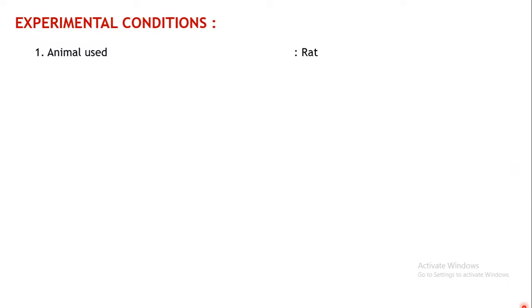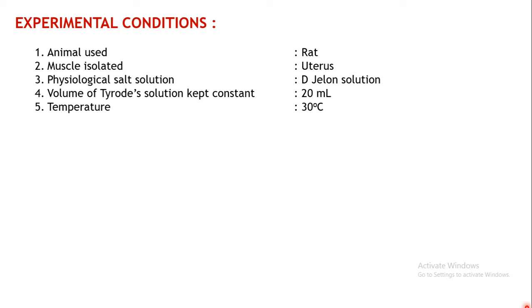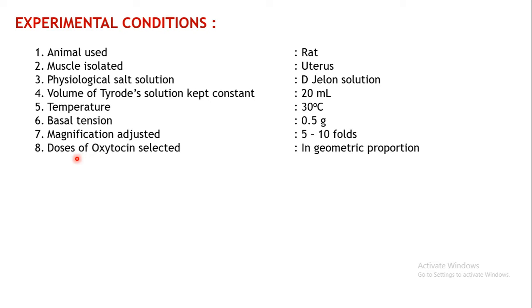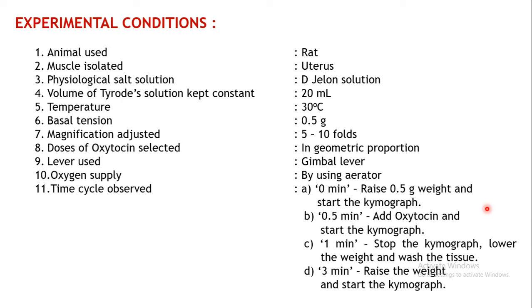Coming to the experimental conditions: the animal used is a rat, the tissue isolated is the uterus, and the physiological salt solution used is de-Jalón solution. The volume of physiological salt solution is kept constant at 20 ml, temperature of the bath is adjusted to 30°C, basal tension is 0.5 grams, and magnification is adjusted to 5.2. The doses of oxytocin are selected in geometric proportion, and the lever used to record responses is the gimbal lever, with oxygen supplied by an aerator.